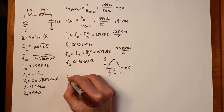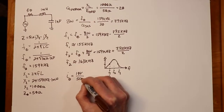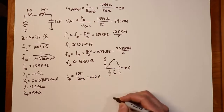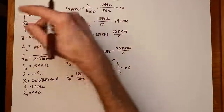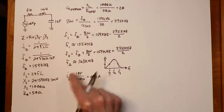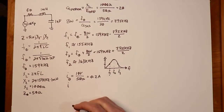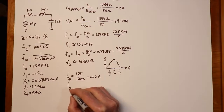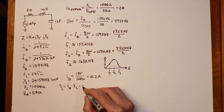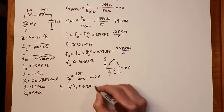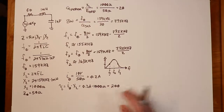Since the reactive terms cancel, all we have left is 50 ohms. The circulating current at resonance is 10 volts divided by Z₀ (50 ohms), which gives 0.2 amps, perfectly in phase. That current times 50 ohms gives 10 volts across the resistor — the full source voltage. Across the inductor, we take that same current and multiply by X_L: with X_L = 1000 ohms, V_L = 0.2 × 1000 = 200 volts.